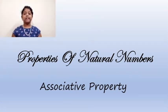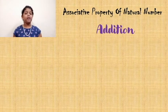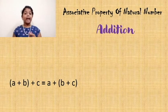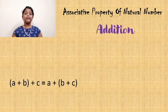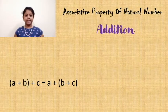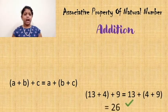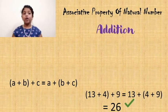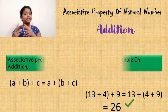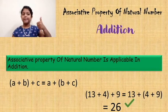Now let's check whether the associative property of natural number is applicable in addition. The formula is (A + B) + C = A + (B + C). That means, if we interchange the places in the bracket, the sum should be the same. With the example, (13 + 4) + 9 = 26 and 13 + (4 + 9) = 26. As we are getting the sum 26 in these two cases, the associative property of natural number is applicable in addition.